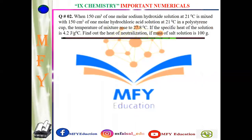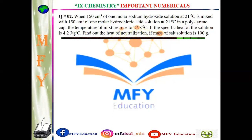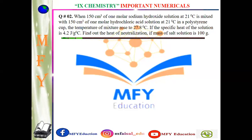अब question number 2 — बहुत आसान सा numerical है। यह एक बार किसी USAT के test में आ चुका है। 150 cm³ of 1 molar sodium hydroxide solution at 21°C is mixed with 150 cm³ of 1 molar hydrochloric acid at 21°C in a polystyrene cup. The temperature of mixture rises to 27.8°C. T1 = 21°C, T2 = 27.8°C।